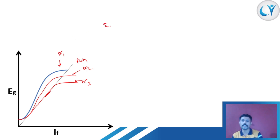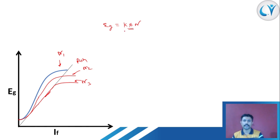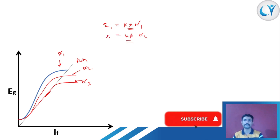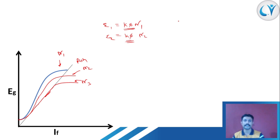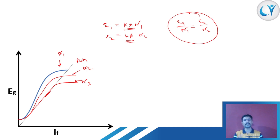We have seen the equation Eg = k·φ·n. Previously we kept speed constant. Now we keep flux constant. In the constant flux condition, at speed n1 we call the EMF as E1. If we change the speed to n2, since k and φ are constant, we get E2. As these two quantities are constant, we can compare: E1/n1 = E2/n2. So if we want to calculate one unknown quantity, we can find it from this relation, and we can verify and establish this relation using the open circuit characteristics.